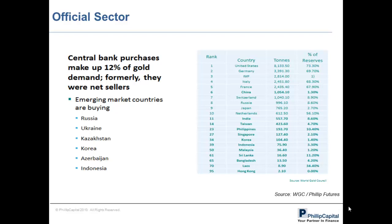Another major contributor to world gold demand is official sector demand, which represents buying and selling from central banks. According to a recent report by the World Gold Council, central bank buying represents 12% of total world gold demand, where the majority of central banks in developed nations were net sellers. However, emerging countries are growing their purchases of gold, especially CIS countries, Korea, and Indonesia. Central banks engage in buying and selling of gold to rebalance between currency reserves and gold holdings. China, being a large economy, has only 1% exposure in gold relative to its currency exposure, showing how much room China still has to increase its gold holdings.